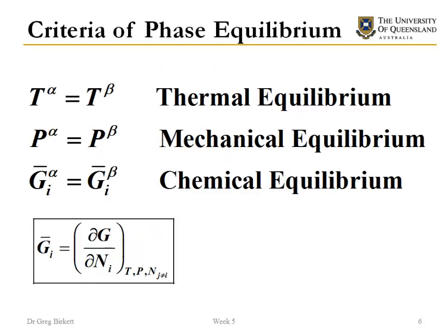This gives us a set of criteria for phase equilibrium. Some of these are quite obvious: if two phases are at equilibrium they'll have the same temperature, the same pressure, and as we've just discussed, they'll have the same partial Gibbs free energy in both phases. This is the criteria we're mainly going to be looking at in the next few slides.